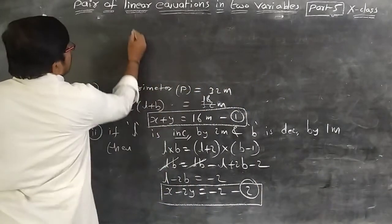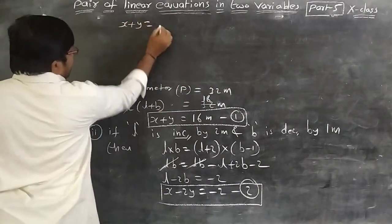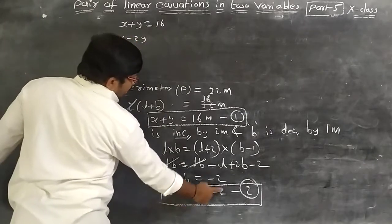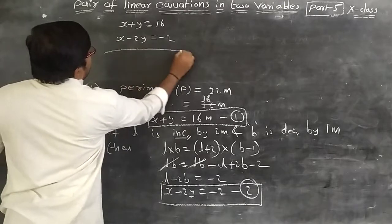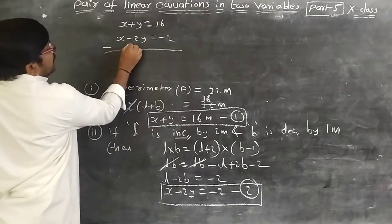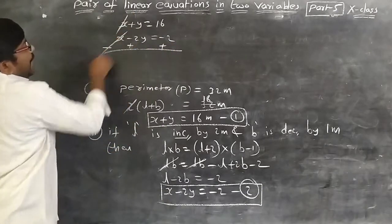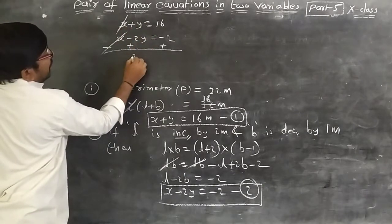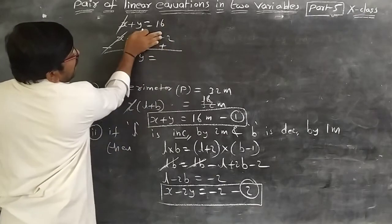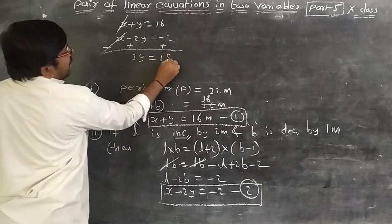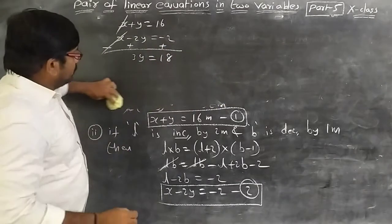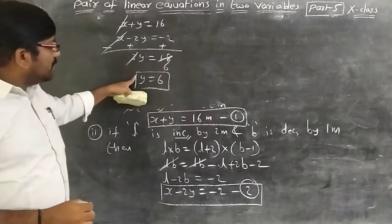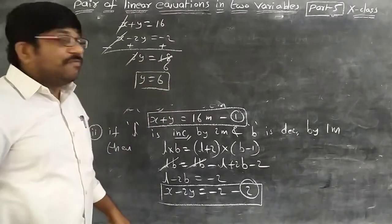Equation 1 is x + y = 16, and equation 2 is x − 2y = −2. Subtracting equation 2 from equation 1: the x terms cancel. We get y + 2y = 16 + 2, so 3y = 18, giving y = 6.